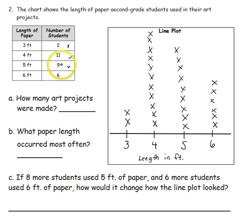I'm going to use my chart, and I'm going to combine some numbers that make it a little bit easier to add. For example, if I add my 11 and my 9 first, that gives me 20, plus 2 is 22, plus 6 is 28. That means that there were 28 projects made.